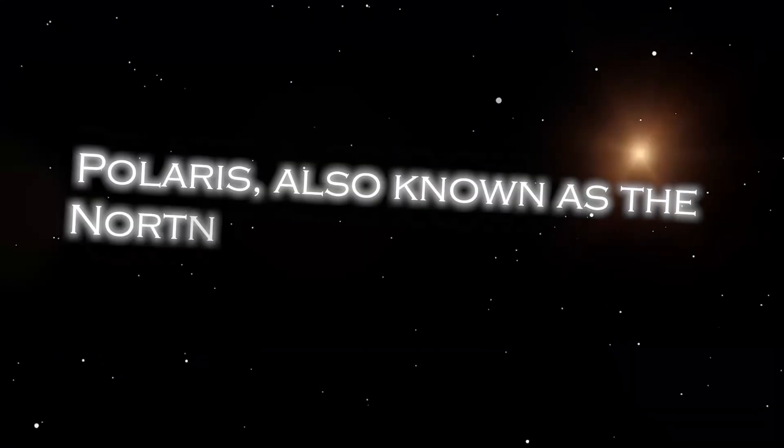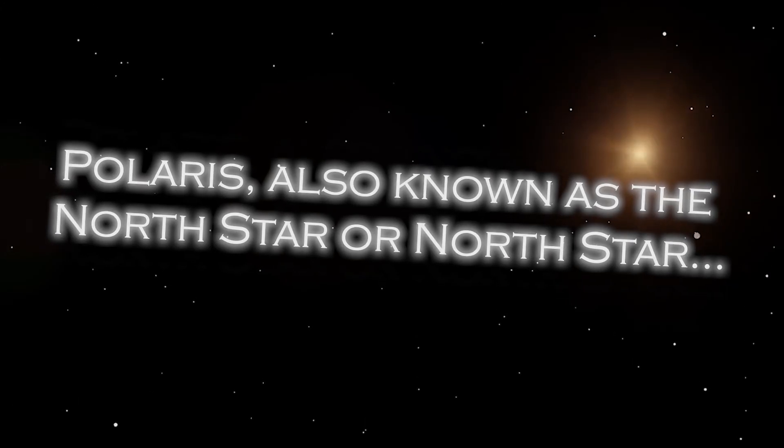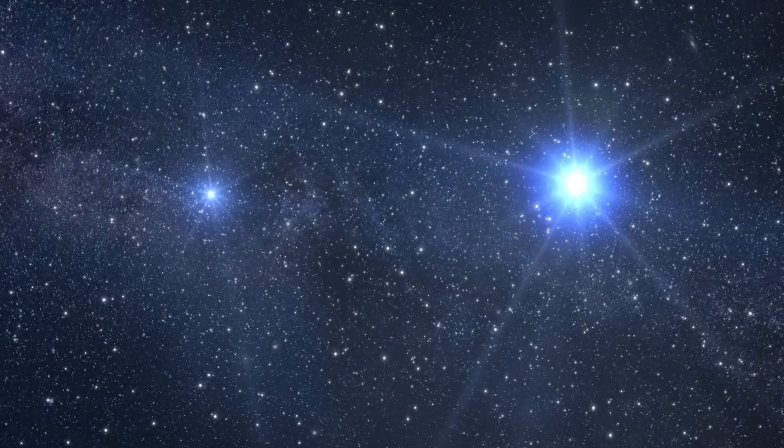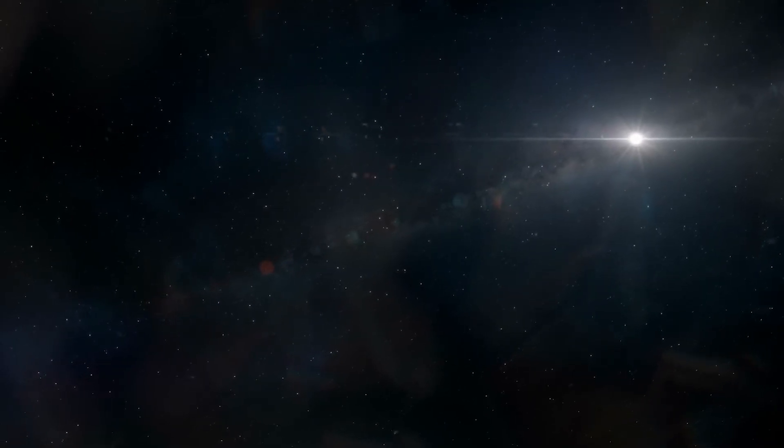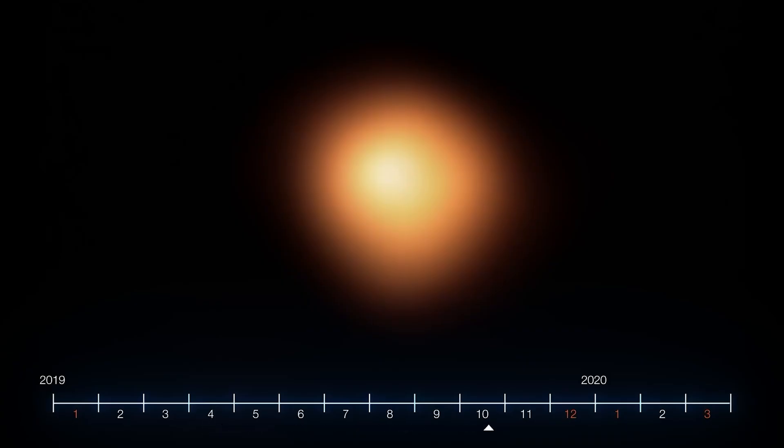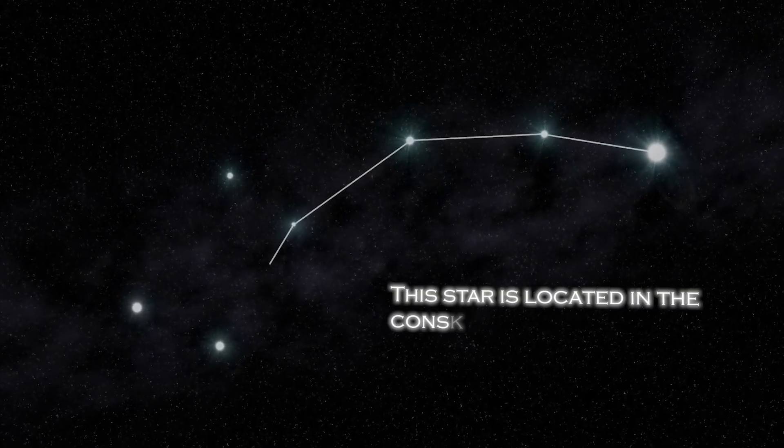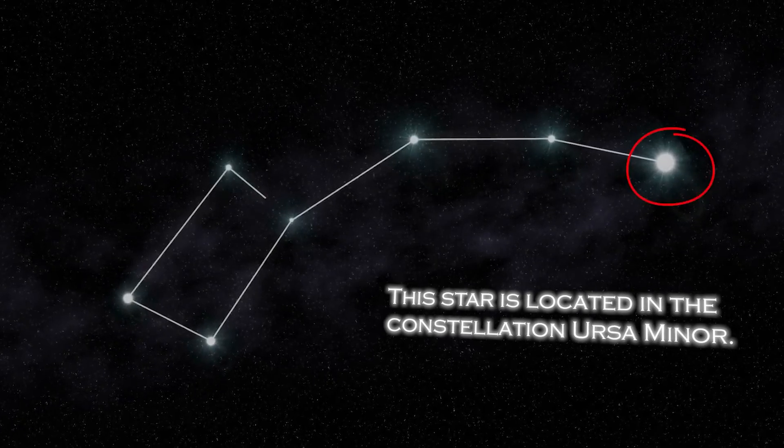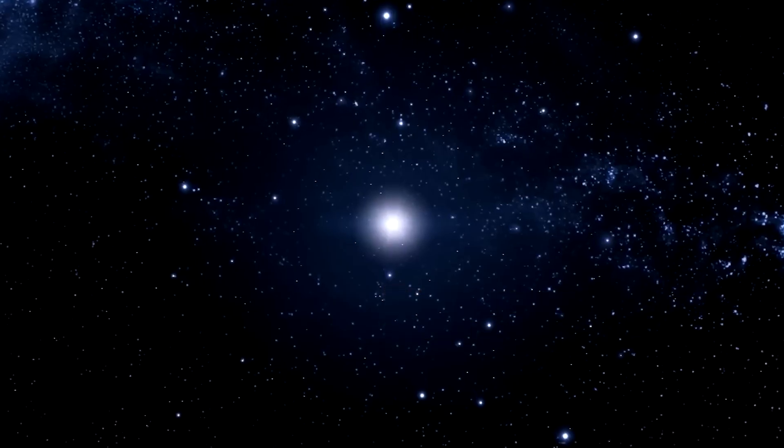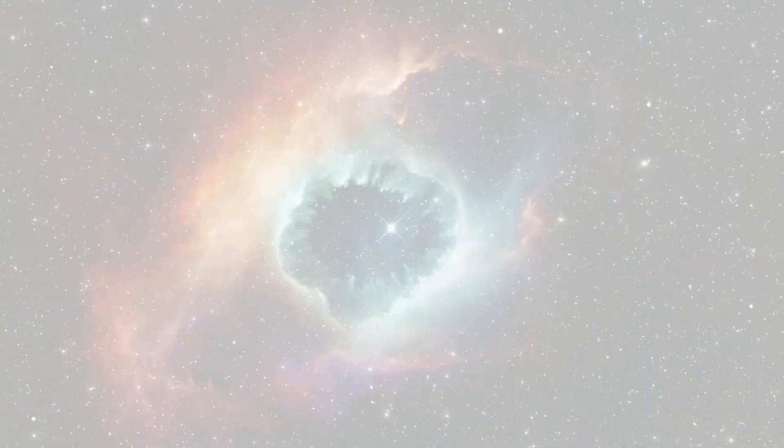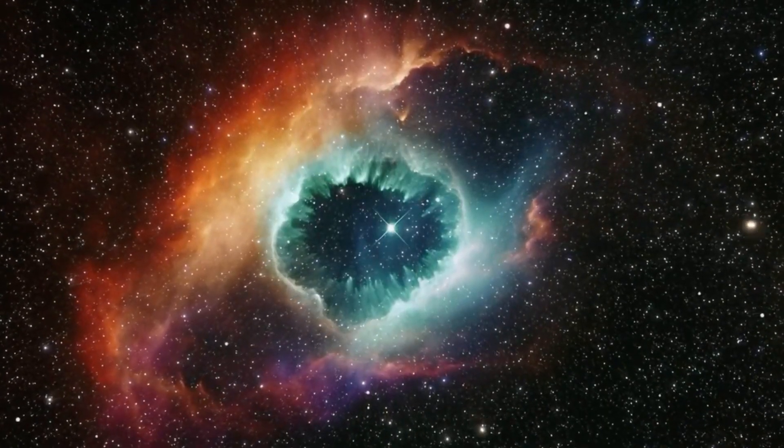Polaris, also known as the North Star, occupies a special position in the sky because of its proximity to the celestial North Pole. It is almost directly over the Earth's North Pole, which gives the illusion that it remains static in the northern sky. The star is located in the constellation Ursa Minor. Polaris is a star of moderate brightness that stands out as a yellow-white supergiant of considerable dimension compared to our Sun.